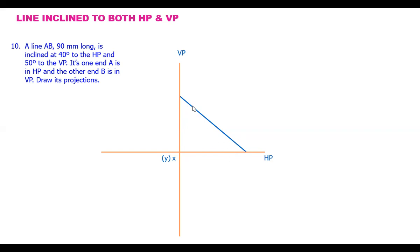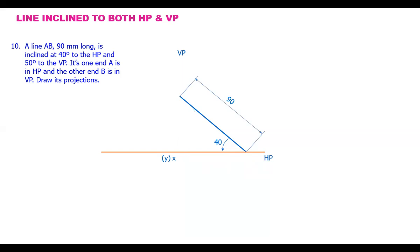So this is a very typical problem. Point A is in HP, so I call this point A here, and this as B. When you draw first, draw a horizontal line and then draw a line at 40 degrees angle — this line is 90 mm. Because point A is in the horizontal plane, when you actually draw this, the second end point B will be in VP.